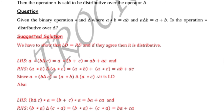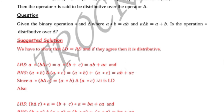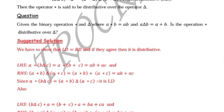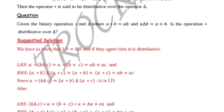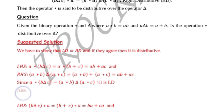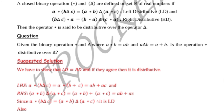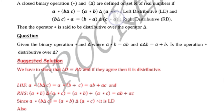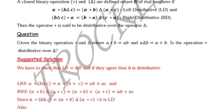Since the left-hand side equals the right-hand side, the multiplication sign is left distributive over the plus sign. We also need to check for right distribution. From the general form: (B triangle C) star A must equal (B star A) triangle (C star A).